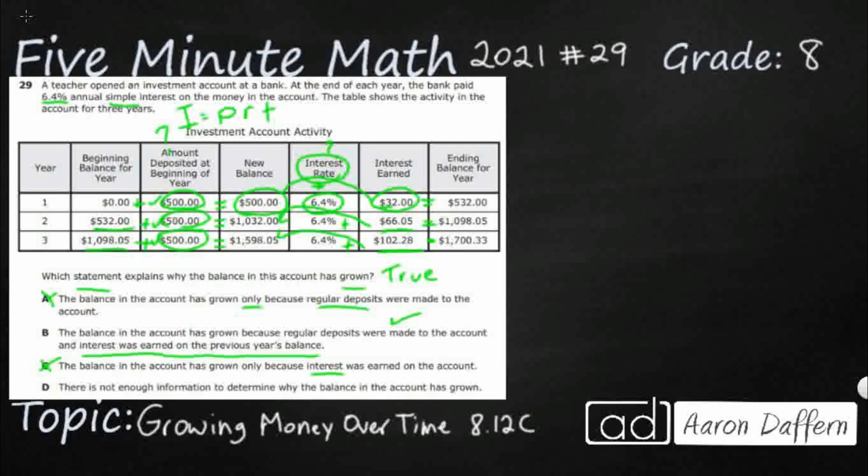D. There's not enough information. No, we do have enough information. All the data is in front of us. We even have the equation if we really wanted to. We could calculate how that interest, 6.4%, is calculated into how much interest is earned each year. And obviously, we just add it up to get our new balance. So our answer here is B.